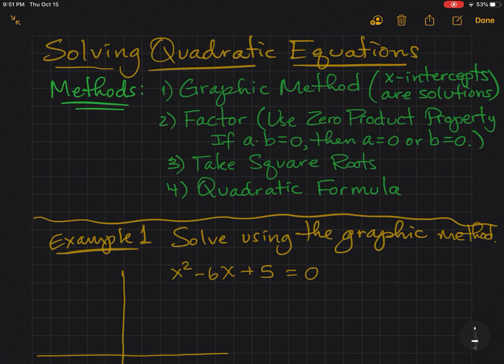The graphic method, where the x-intercepts will find the solutions. Factoring, and then using the zero product property. If you don't recall from Algebra 1, if you multiply two numbers together and it equals zero, it means at least one of the numbers was zero. Also, you can solve a quadratic equation by taking the square root of both sides. And lastly, the quadratic formula.